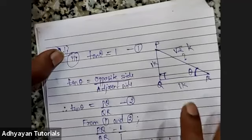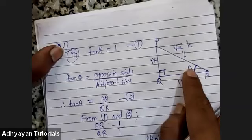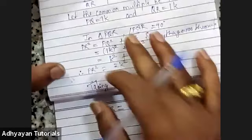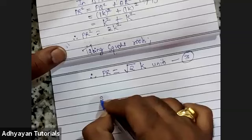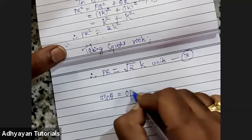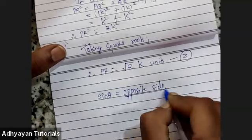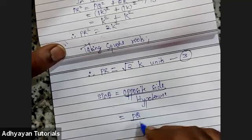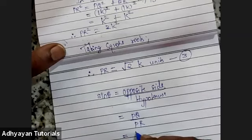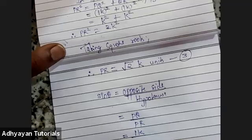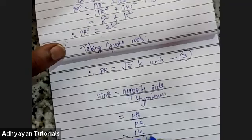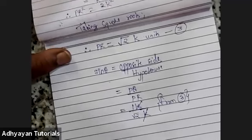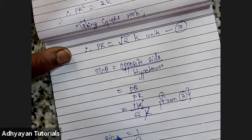Since I have PR = √2K, tan θ is known; we can find sin θ and cos θ. Sin θ = opposite upon hypotenuse = PQ upon PR = 1K upon √2K. K, K gets cancelled. The answer is 1 upon √2, which is sin θ.